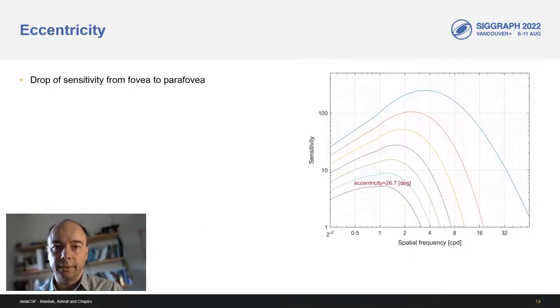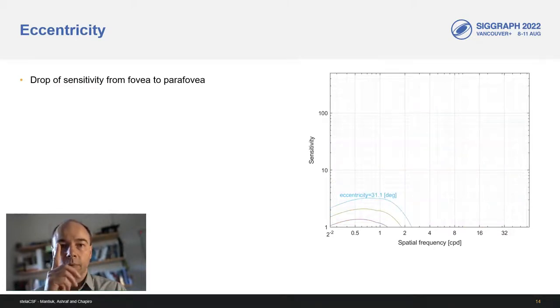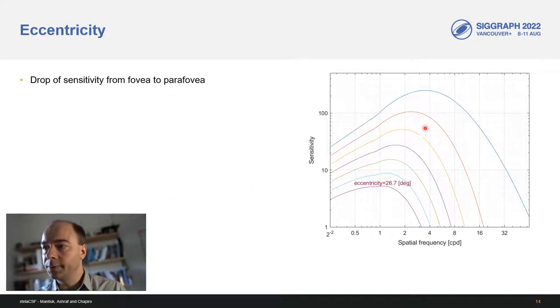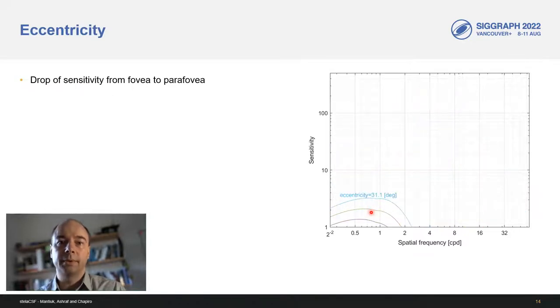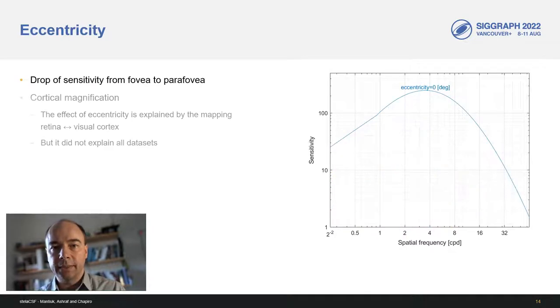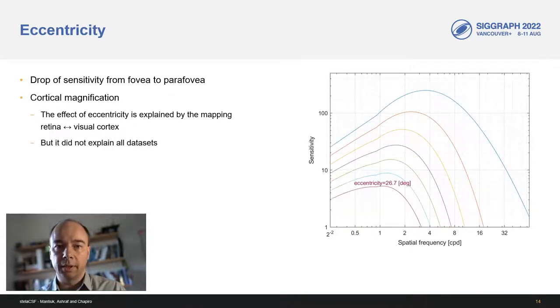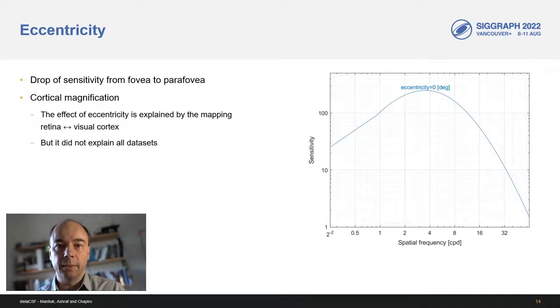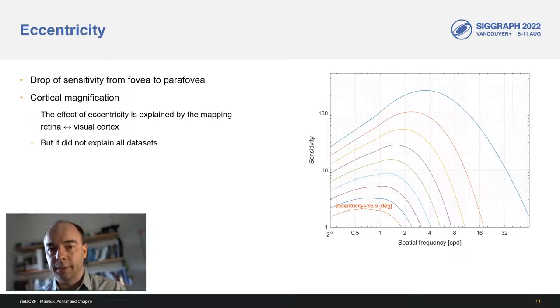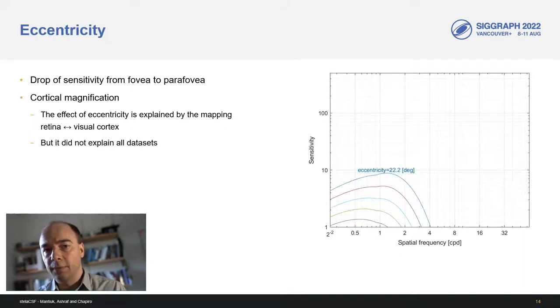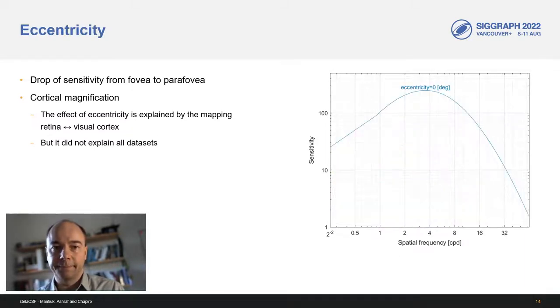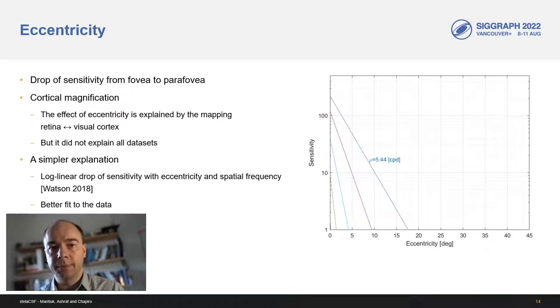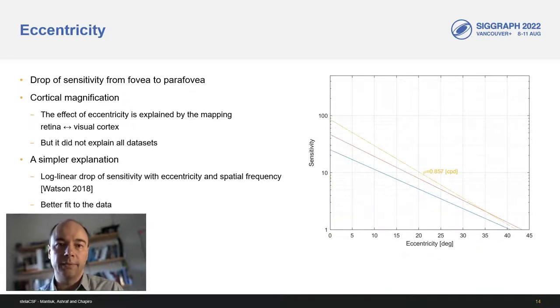The final dimension is eccentricity: how distant is the stimulus in the visual field from the fovea. As the eccentricity increases, the sensitivity drops and this drop strongly depends on the spatial frequency. The effect of eccentricity is usually explained by the cortical magnification, the fact that the fovea is mapped to a much larger portion of the visual cortex than the para-fovea. We attempted to model the effect of eccentricity as cortical magnification, but we found that it cannot explain some of the datasets. Instead, we found that a simplified relationship from the pyramid of visibility can model the data a bit better and offers the advantage of simplicity.